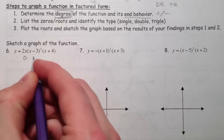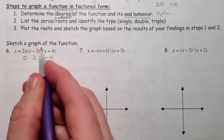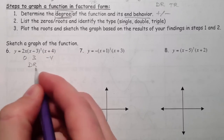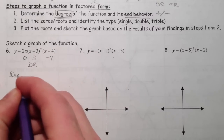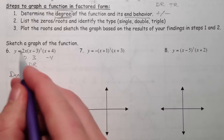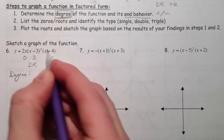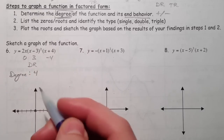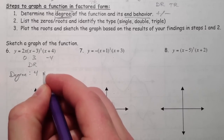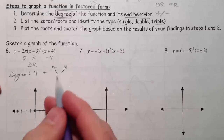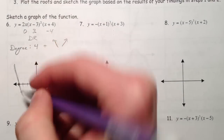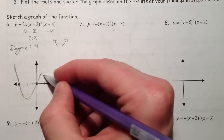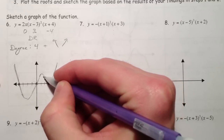So the zeros are zero, three, and negative four. Three is being squared, so that is a double root, and so it better bounce at that spot. First, it's positive out front, and the degree is one, two, three, four — I'm counting the squared term twice — so it's degree four and positive. It should go up to the left and up to the right, just like a basic parabola. So it comes down from the top, crosses at negative four, crosses at zero, and then does a little bounce at three because it's the double root.